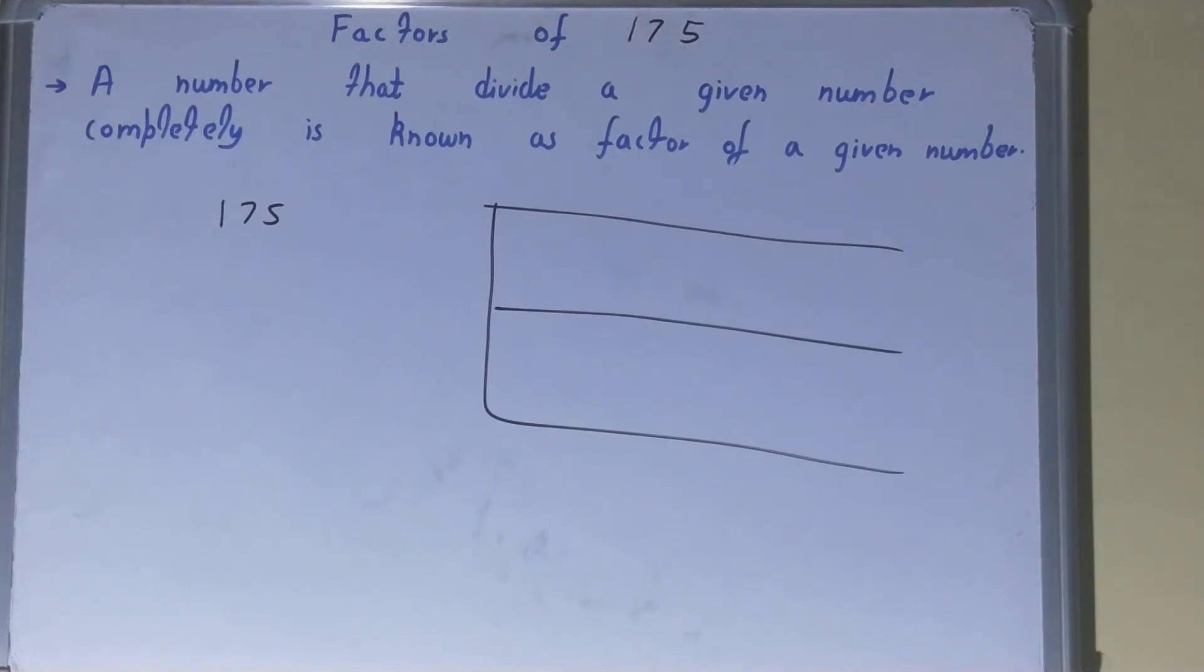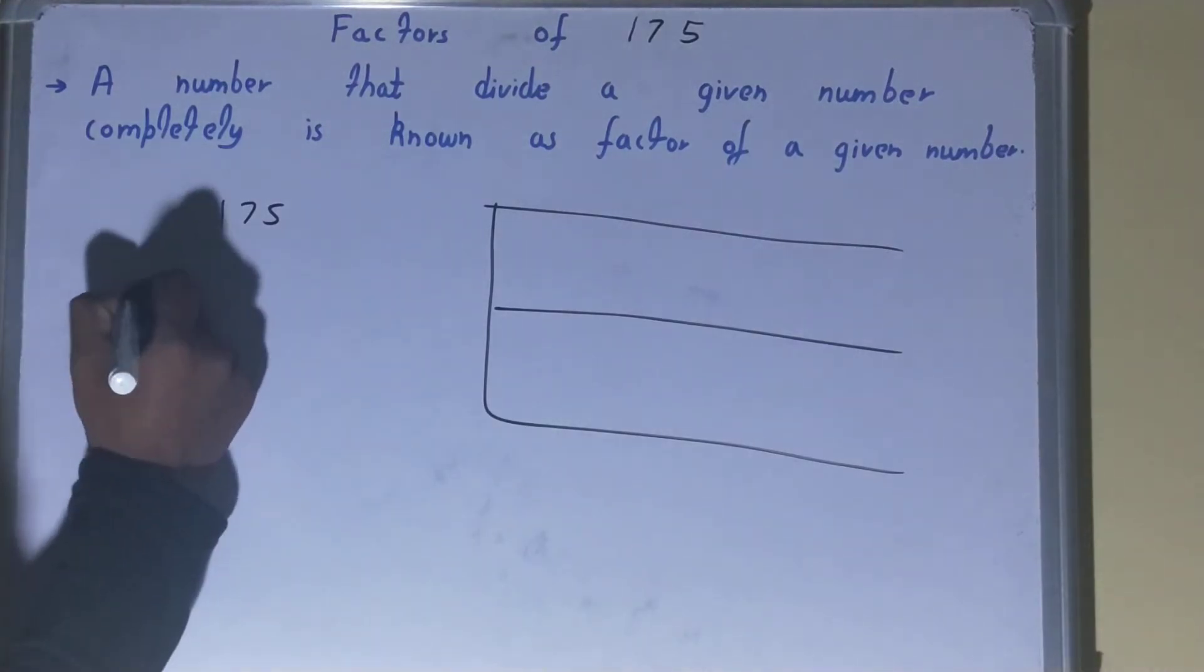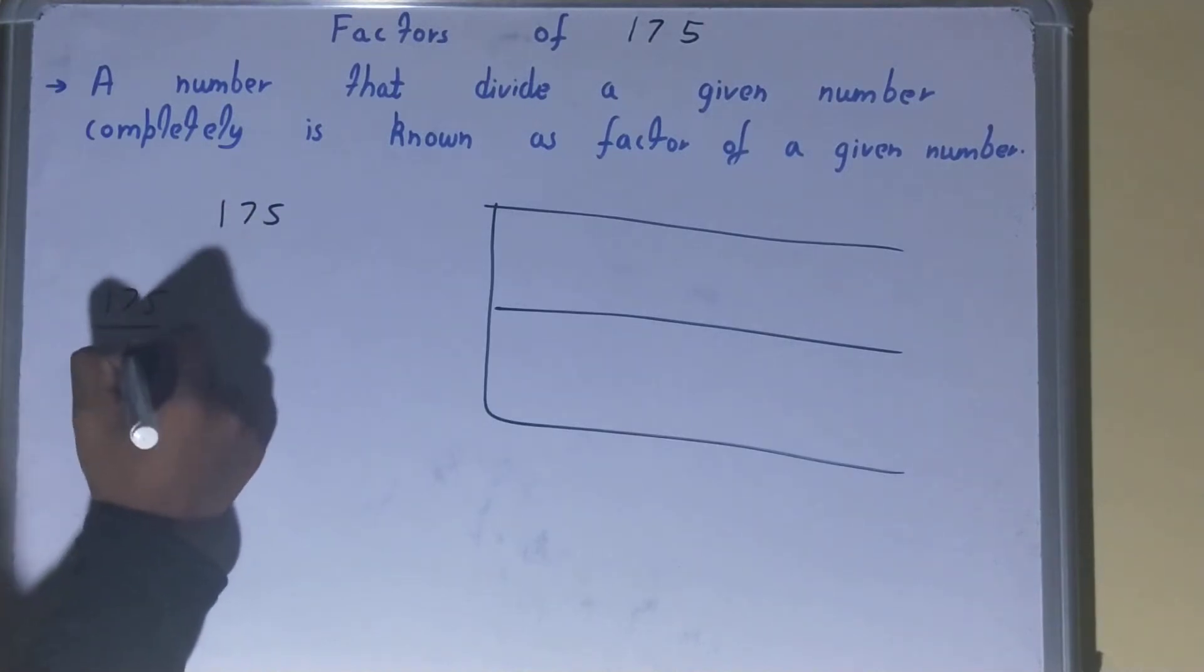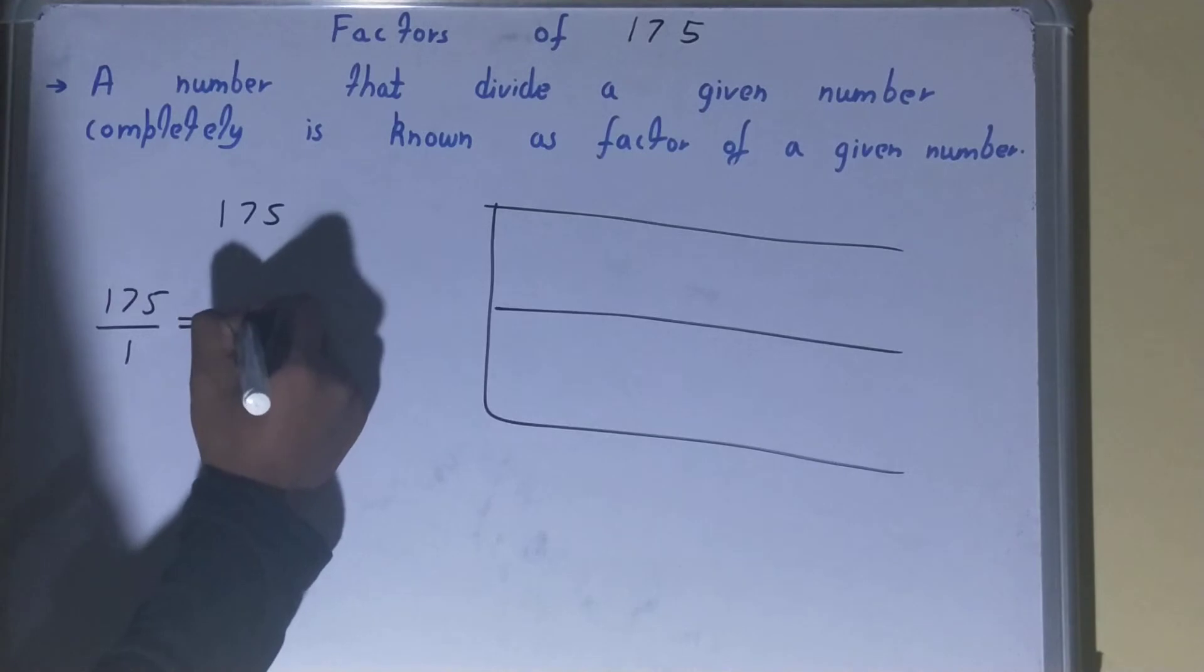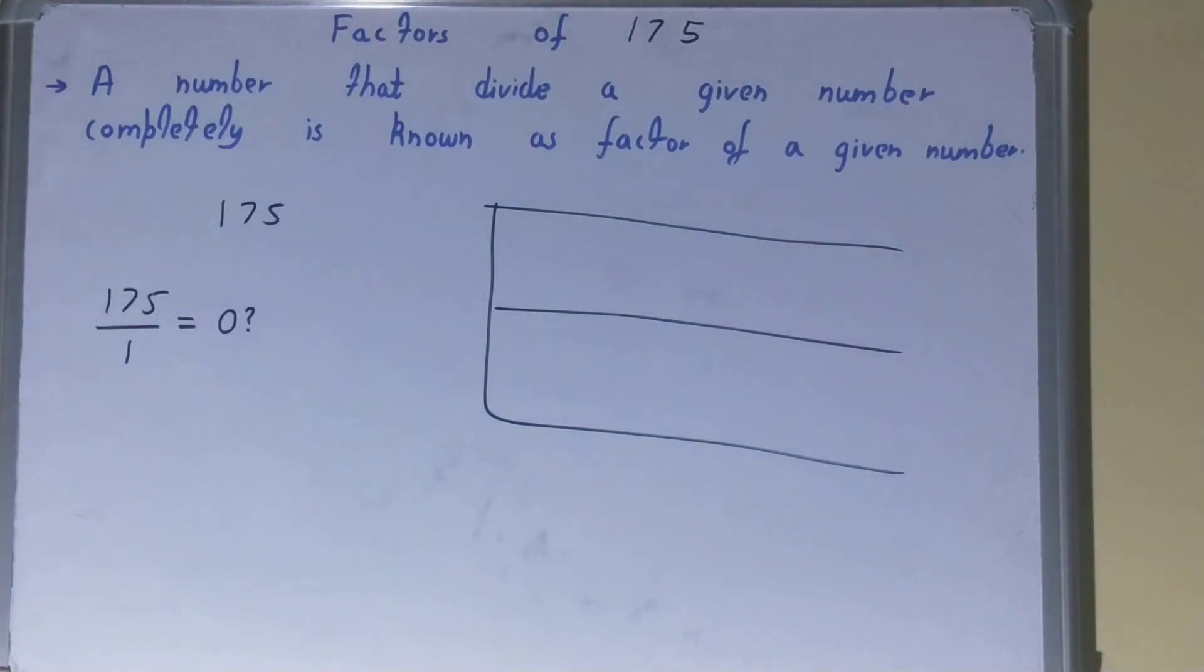That is 1. Divide the number 175 by the lowest natural number, that is 1. If you do so, will you get the remainder 0 on performing division? The answer is yes, you will get the remainder as 0. So because you will get the remainder as 0 on performing division, you can say 1 is the factor of 175.